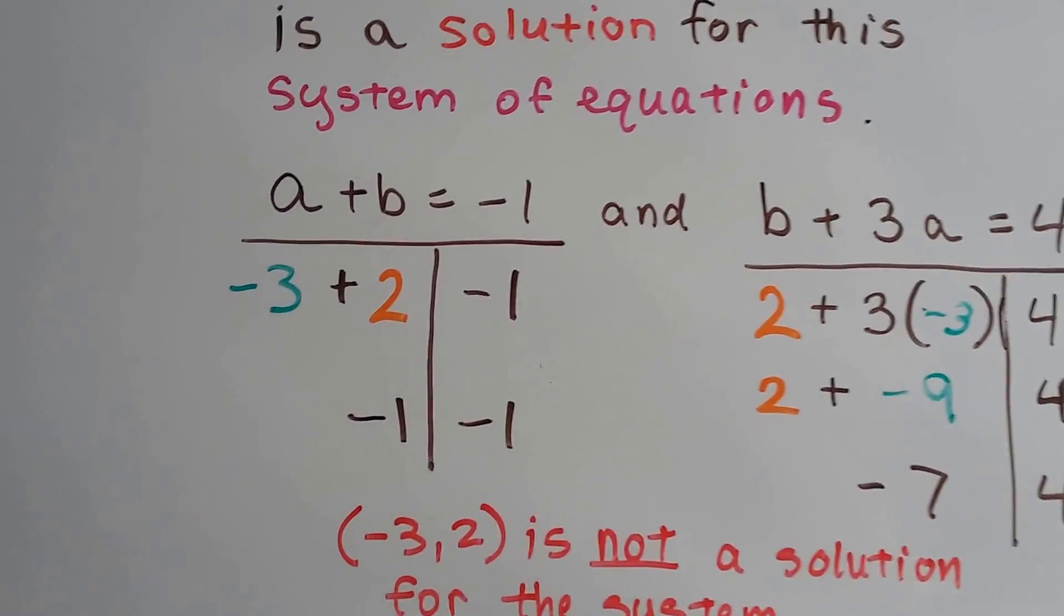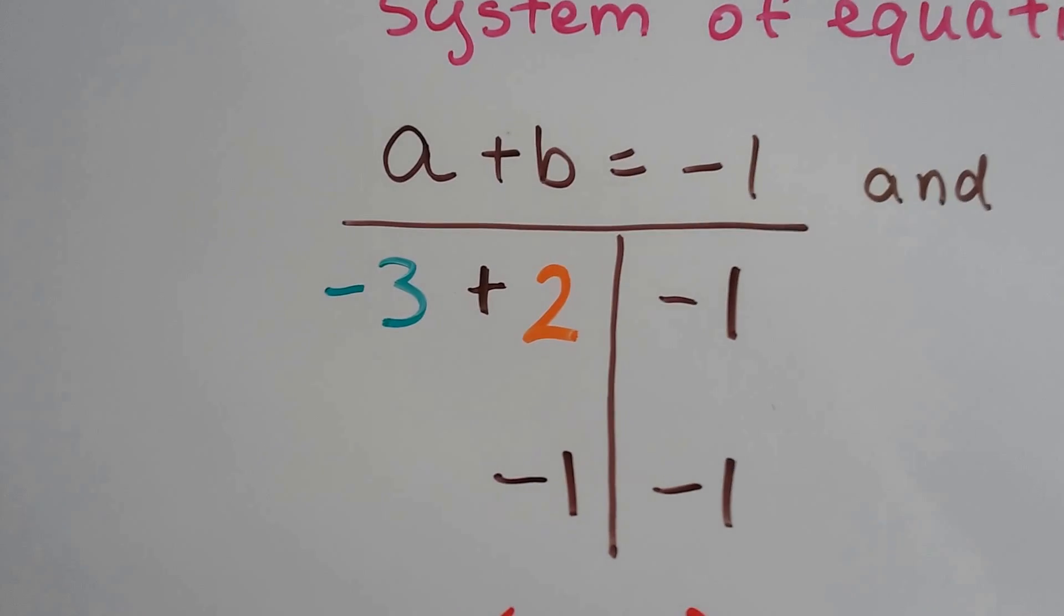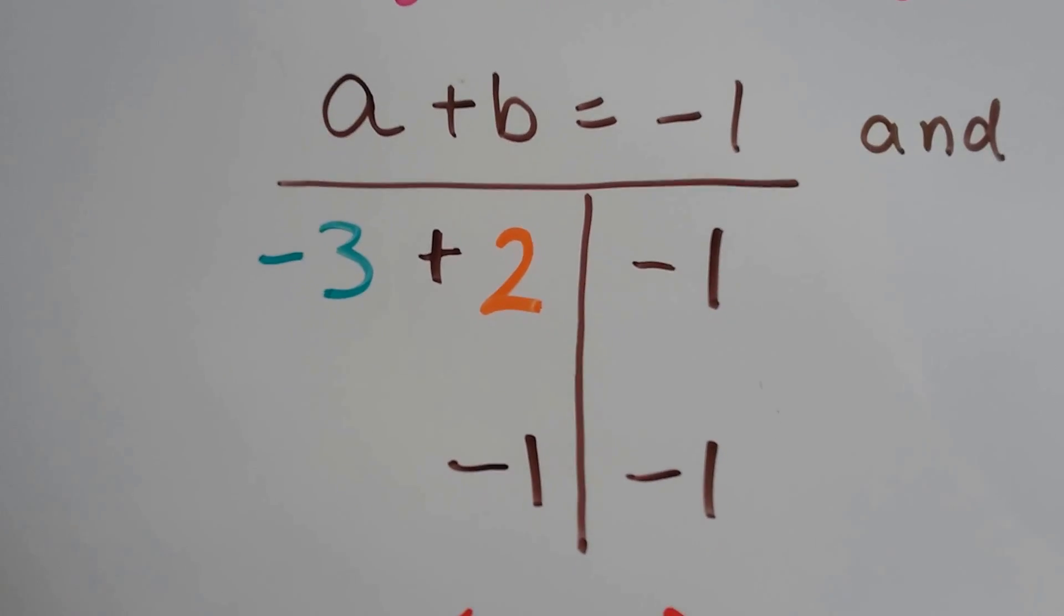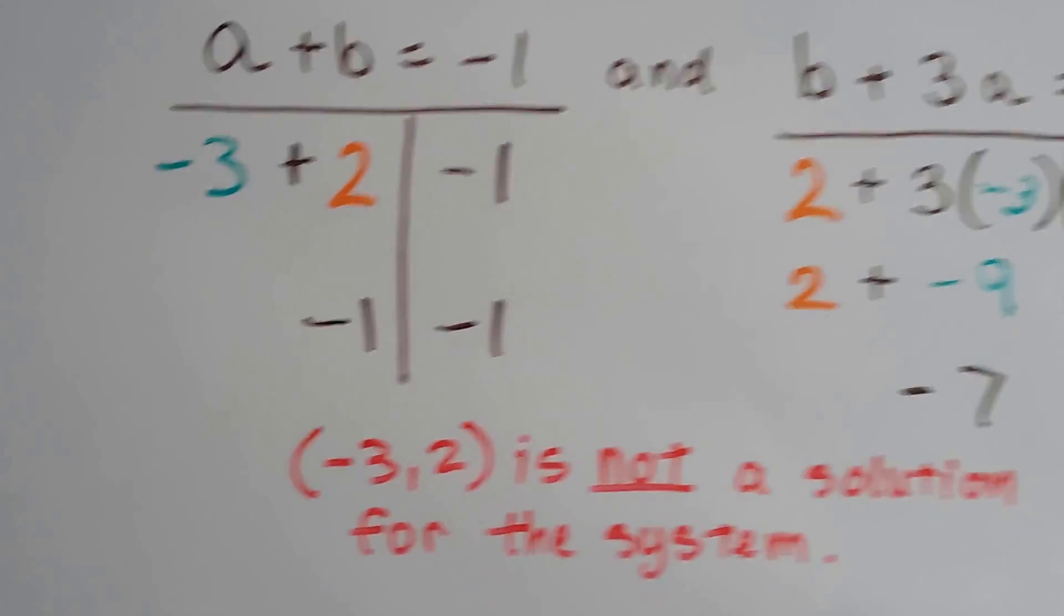And on this one, we get negative 3 plus 2 equals negative 1. Well yeah, negative 3 plus 2 is negative 1. Negative 1 is negative 1, okay?